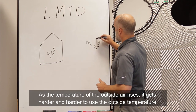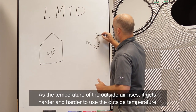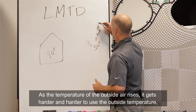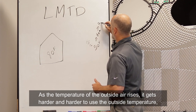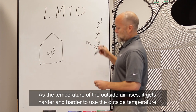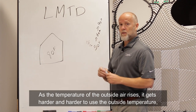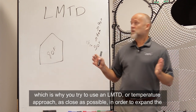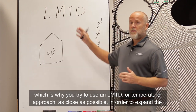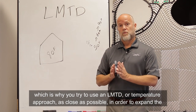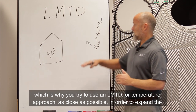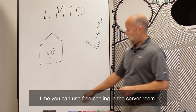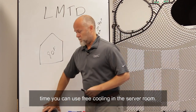As the temperature of the outside air rises, it gets harder and harder to use the outside temperature. That is the reason why normally you try to use an LMTD or a temperature approach as close as possible, in order to expand the time that you can use free cooling in the server room.